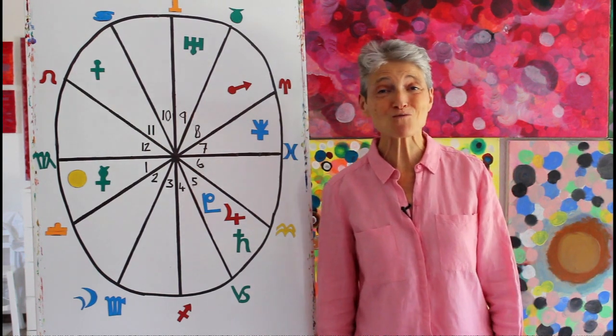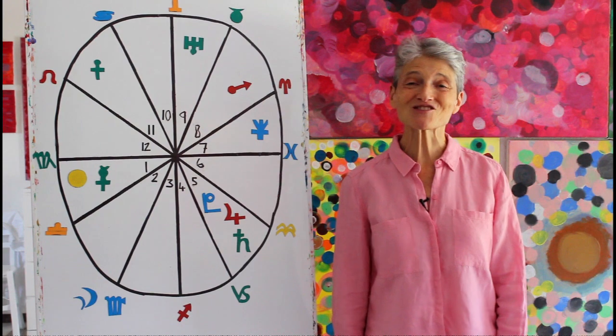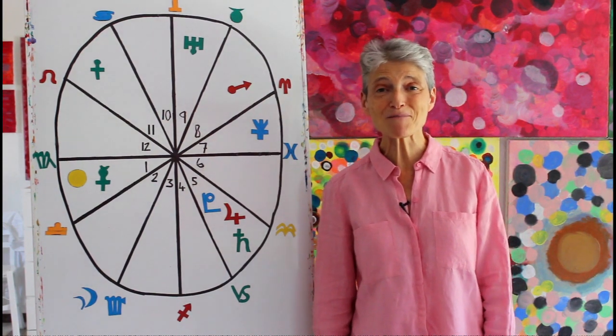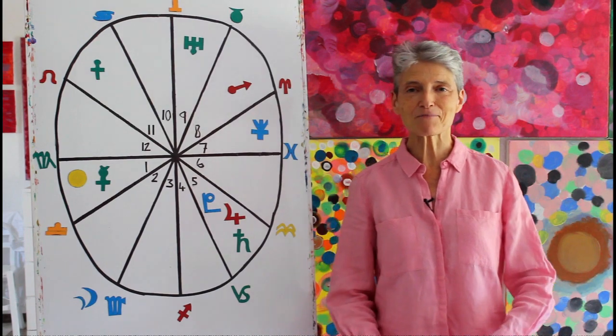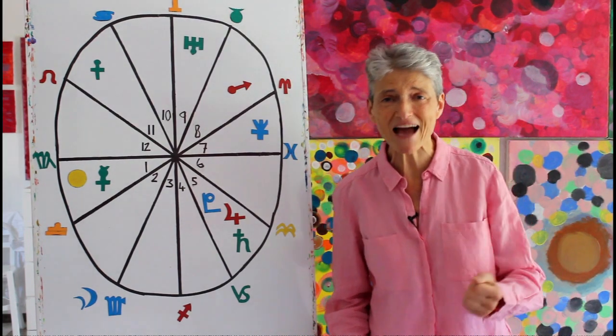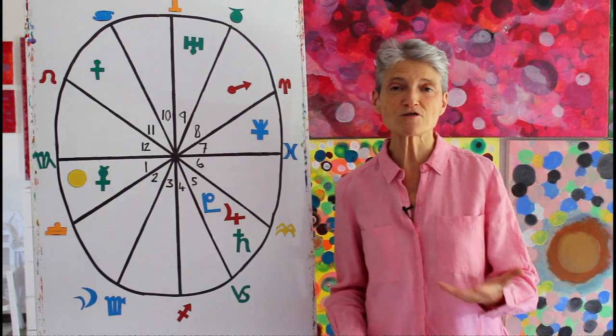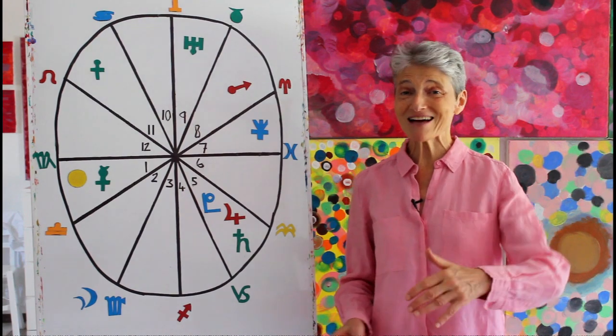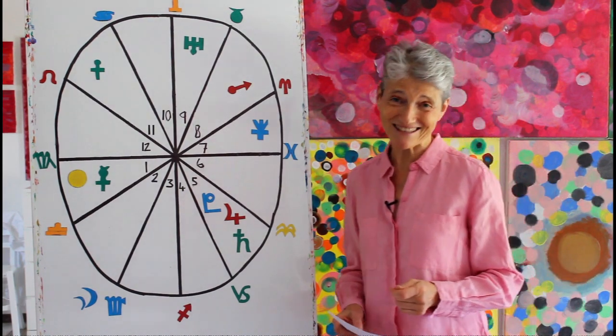Welcome to your September 2020 horoscope. This is one big month, because on the 9th of September until the 13th of November, Mars, the planet that rules your energy, your drive, your passions, your forward momentum, is going to go retrograde. But more about that as we progress through the dates.